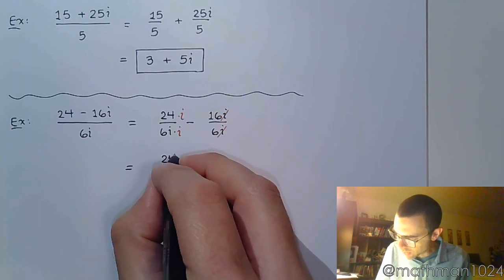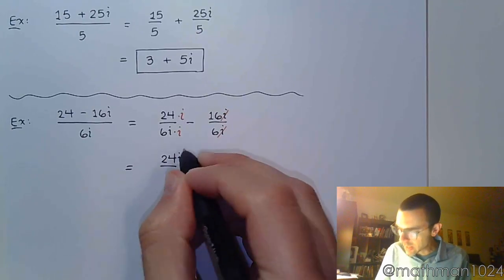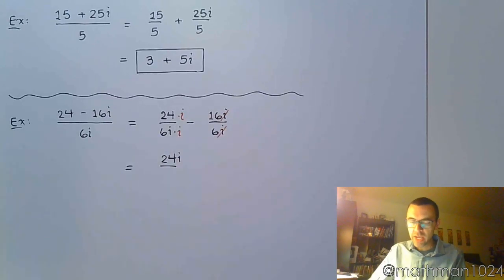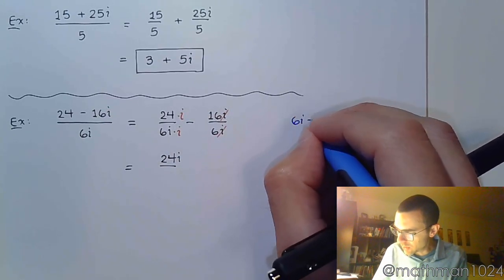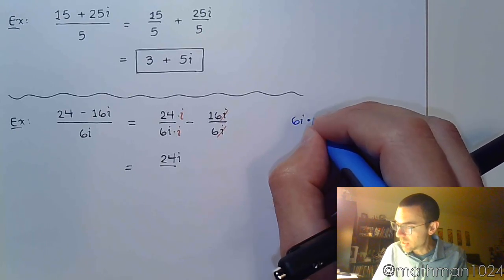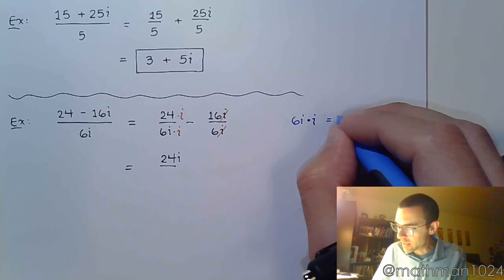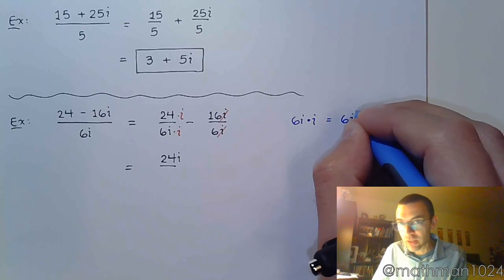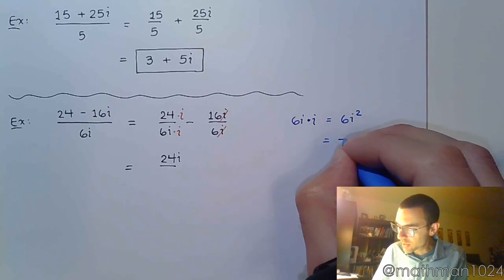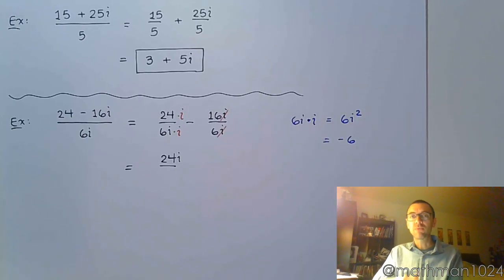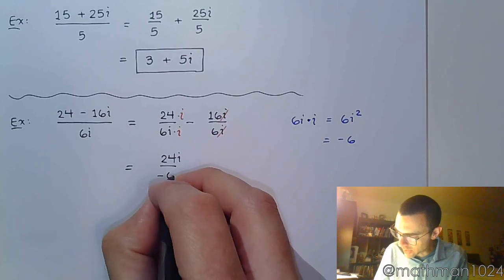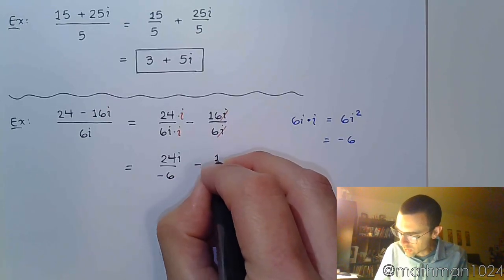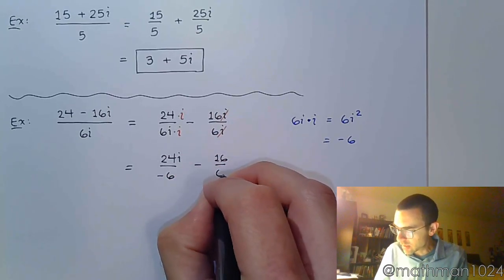Let's see what we get. Alright, so this is 24i. Now, think about what's going to happen here. If you need to write that out off to the side, please do so. This is 6i times i. That gives me 6i squared, which becomes negative 6 once I make that conversion from i squared back to the negative factor. So, this is 24i over negative 6, and this is still minus 16 over 6.